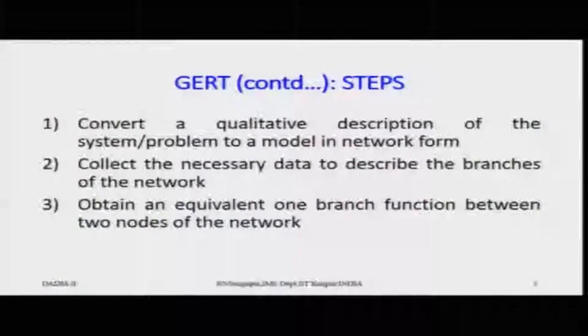Next, you collect the necessary data to describe the branches of the network. The branches have a probability and a time period — if the process follows any path it will have a probability given by a certain distribution, and a time. You also obtain an equivalent one-branch function between two nodes, combining probabilistic and deterministic AND/OR concepts to formulate the project network into the GERT logical network for easier solving.